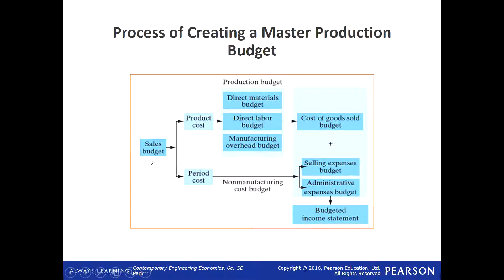So you can compare your actual income statement with the budgeted income statement and then evaluate the performance of those who are responsible. How do we start preparing a budget? We start from the sales budget. This is the starting point of what we call a master budget. A master budget is a combination of all the budgets included in order to calculate a budgeted income statement. The starting point is the sales budget — how much we are expected to sell.